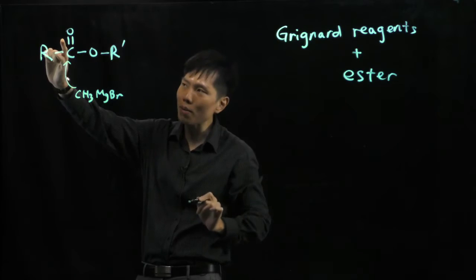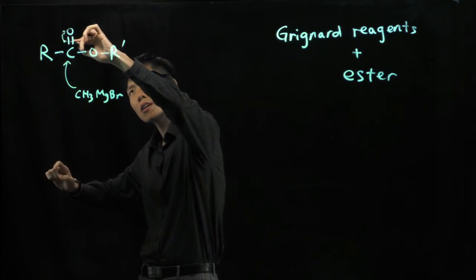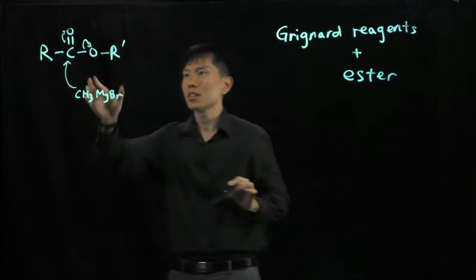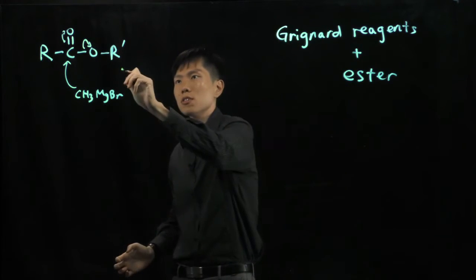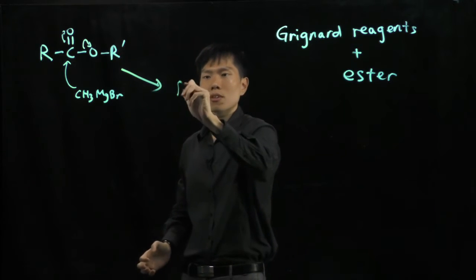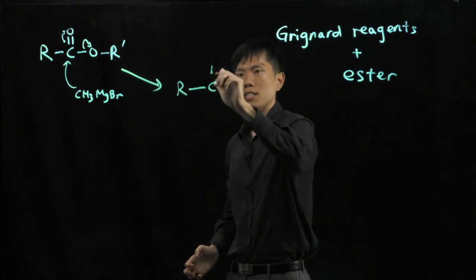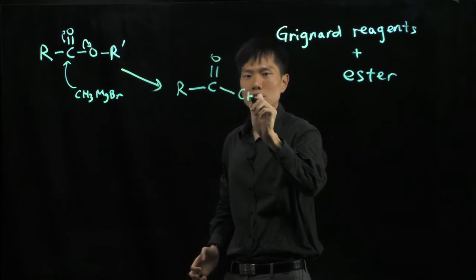But the thing is, you'll reform a pi bond and then kick out this OR, because OR here can be a leaving group. It can leave the molecule. So, after this step, what you have here is a CO double bond and CH3.